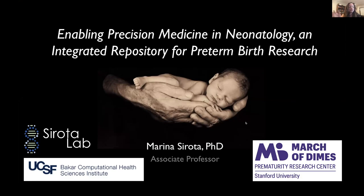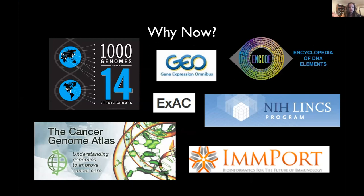I always start by saying why I'm excited to be a computational biologist today. There are tons of publicly available data that we can query and analyze in creative ways to ask new questions about disease. These are some examples of those resources: the Gene Expression Omnibus, which captures pretty much every transcriptomic study — microarray, RNA-seq, and even single-cell RNA-seq. There's clinical data in databases like IMPORT. The cancer community has really figured this out well with the Cancer Genome Atlas, a phenomenal resource of over 10,000 cancer samples profiled with a variety of technologies in a very digestible way. But nothing like this existed for pregnancy outcomes until we started working on it.